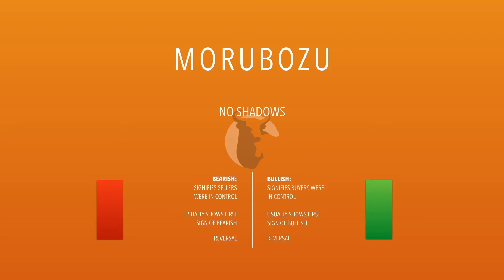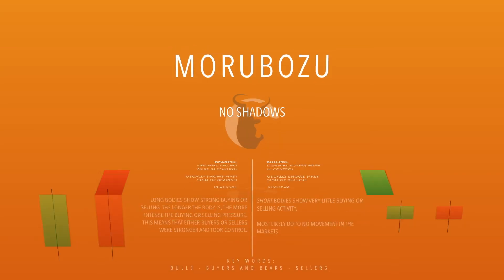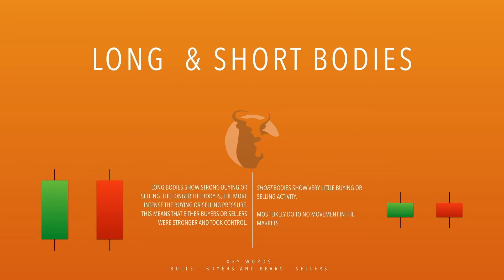In the case of the green candle, the bullish candle, it's the same exact thing, just in the opposite direction going up. The next set of candles we will learn about are long and short bodies. A long body is basically just like the last body we learned, but now we have an upper wick and lower wick. The same thing goes for the short bodies.